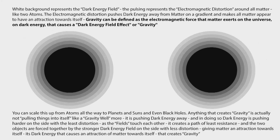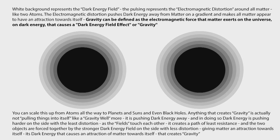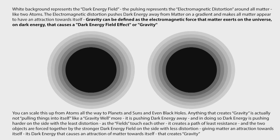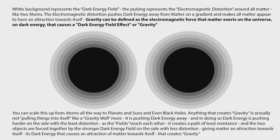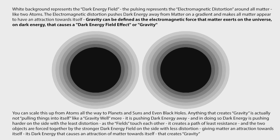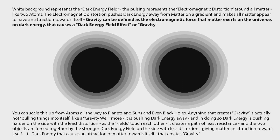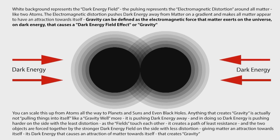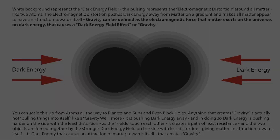It is pushing dark energy away, and in doing so, dark energy is pushing harder on the side with the least distortion. As the fields touch each other, it creates a path of least resistance, and the two objects are forced together by the stronger dark energy field on the side with less distortion, giving matter an attraction towards itself. It's dark energy that causes an attraction of matter towards itself that creates gravity.